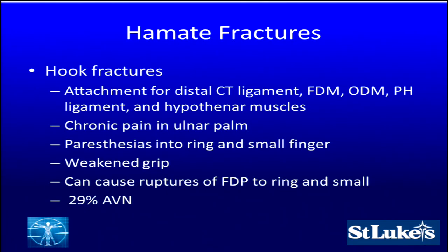Hamate fractures tend to be associated with manual laborers and people who hit the ulnar aspect of their hand — your weekend golfers who hit a fat shot on hard ground. This is your attachment for the distal carpal tunnel ligament, flexor digitorum minimi, abductor digitorum minimi, pisohamate ligament, and hypothenar muscles. Undiagnosed or unhealed hamate hook fractures can cause chronic pain in the ulnar palm. Because the sensory branch of the ulnar nerve is right there, it can lead to paresthesias localized to only the volar aspect of the ring and small finger — differentiating it from cubital tunnel, where you'd also get dorsal involvement. Given the ring and small finger FDP tendons are near the hook, you can get tendinitis, weakened grip, and eventual rupture of the FDP to the ring and small. 29% of hamate hook fractures will go on to avascular necrosis.